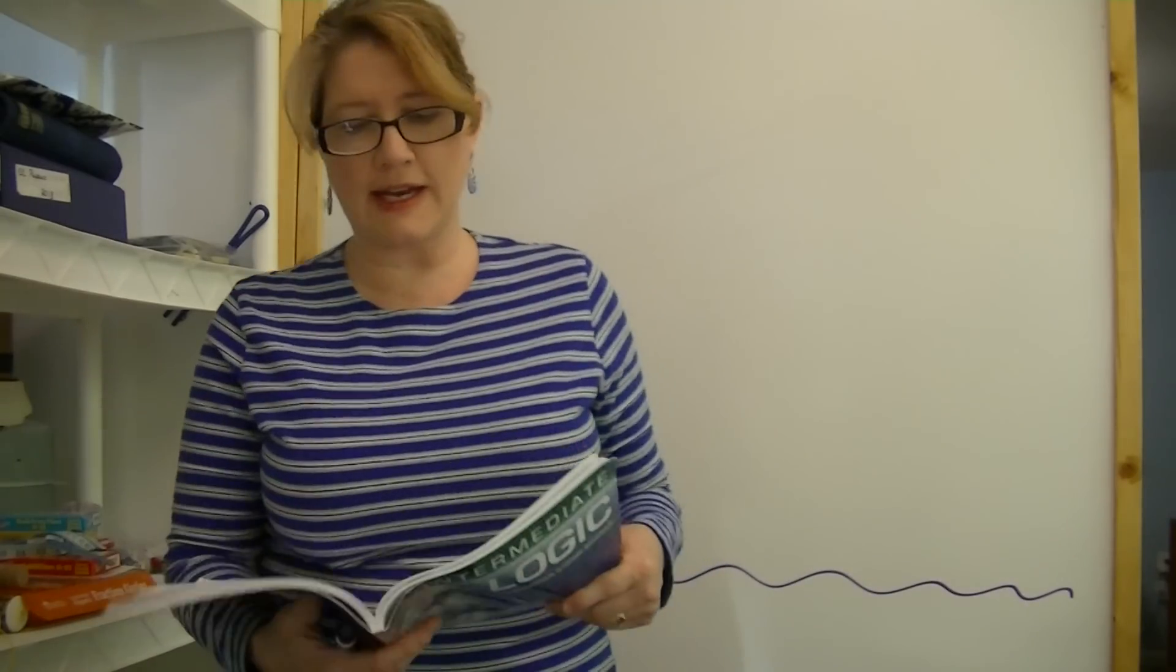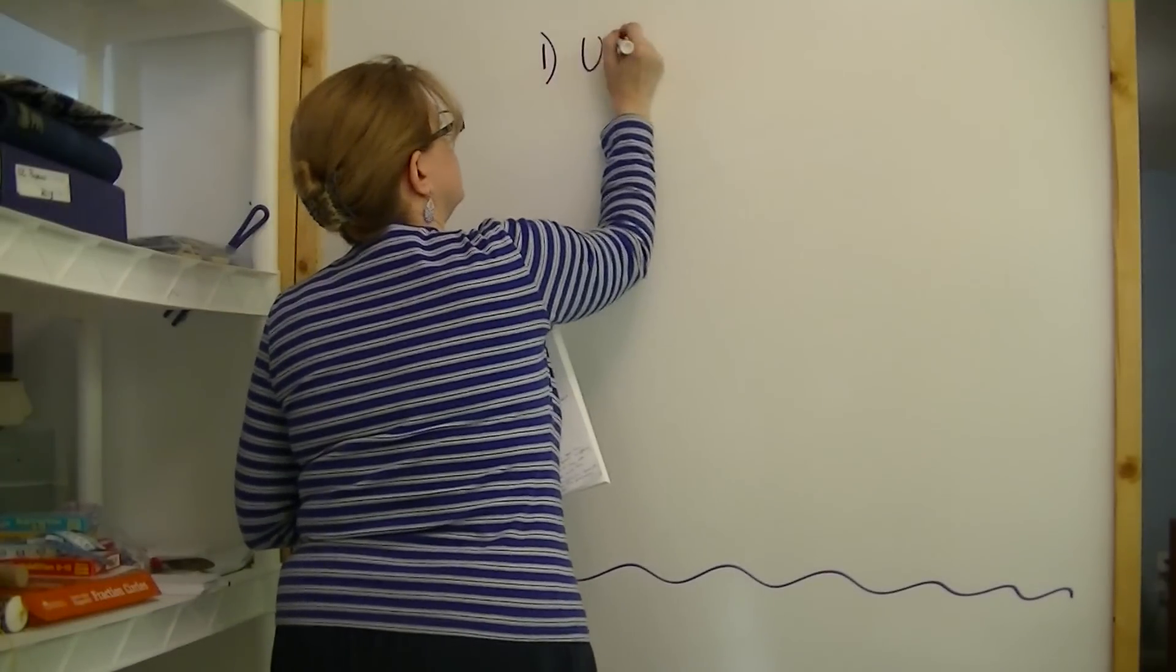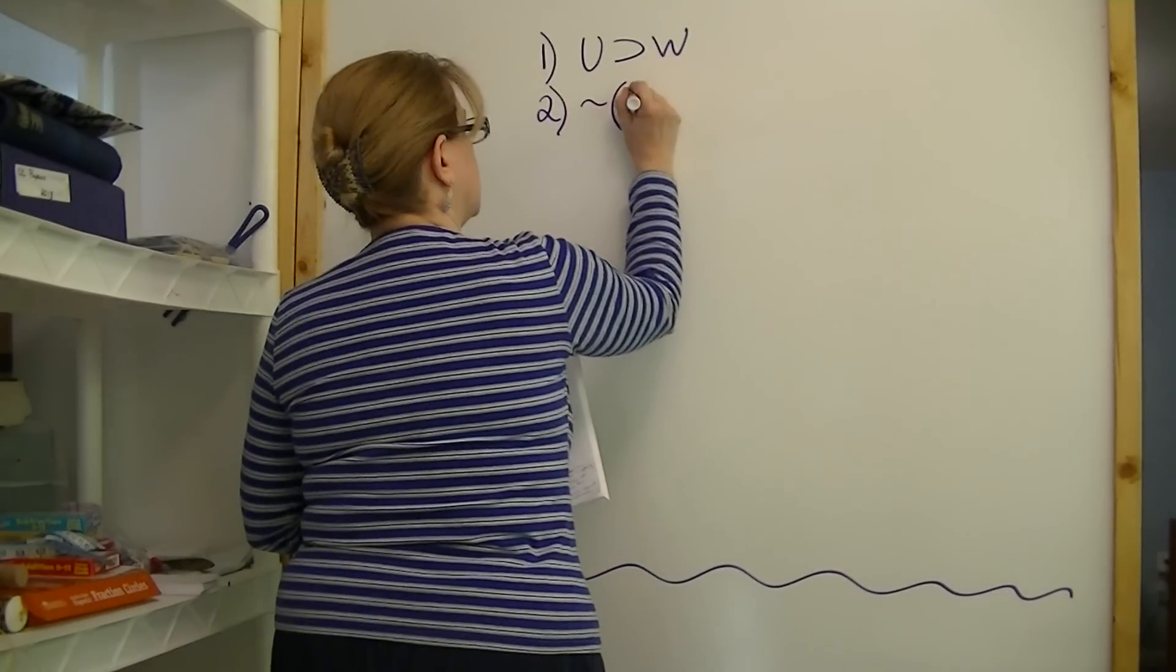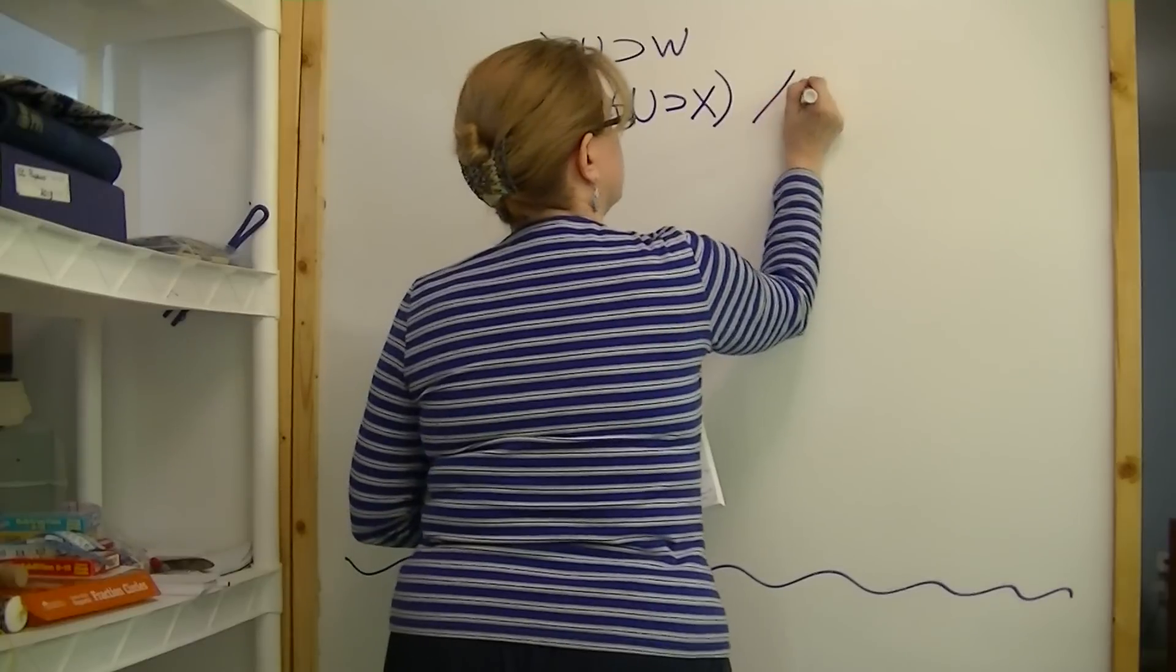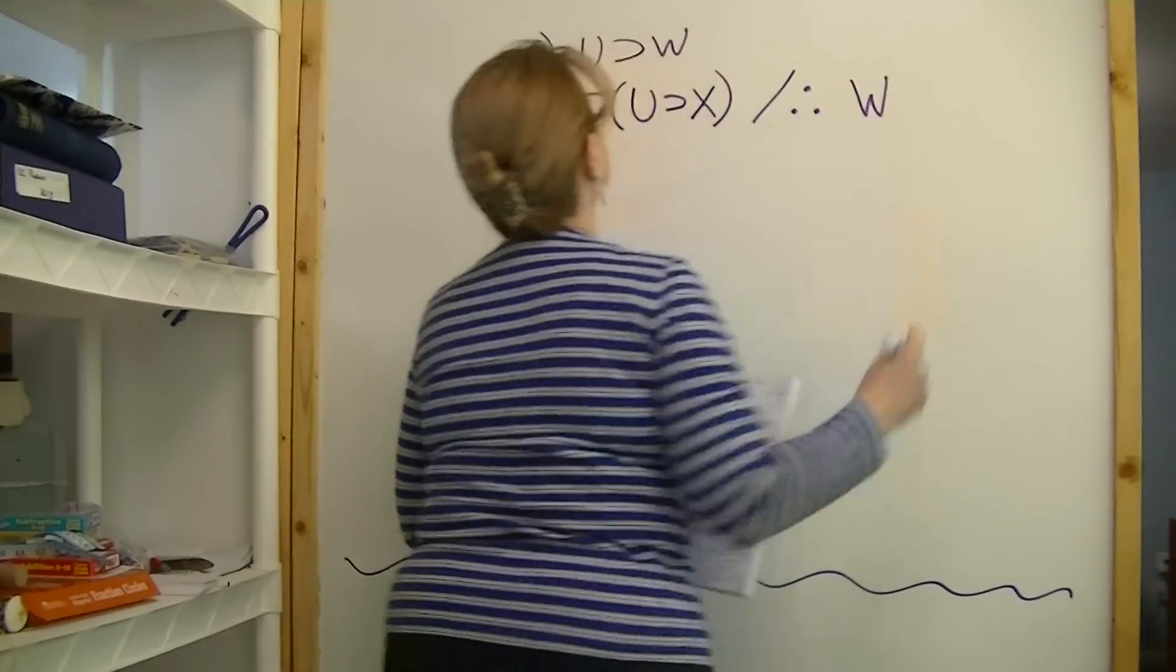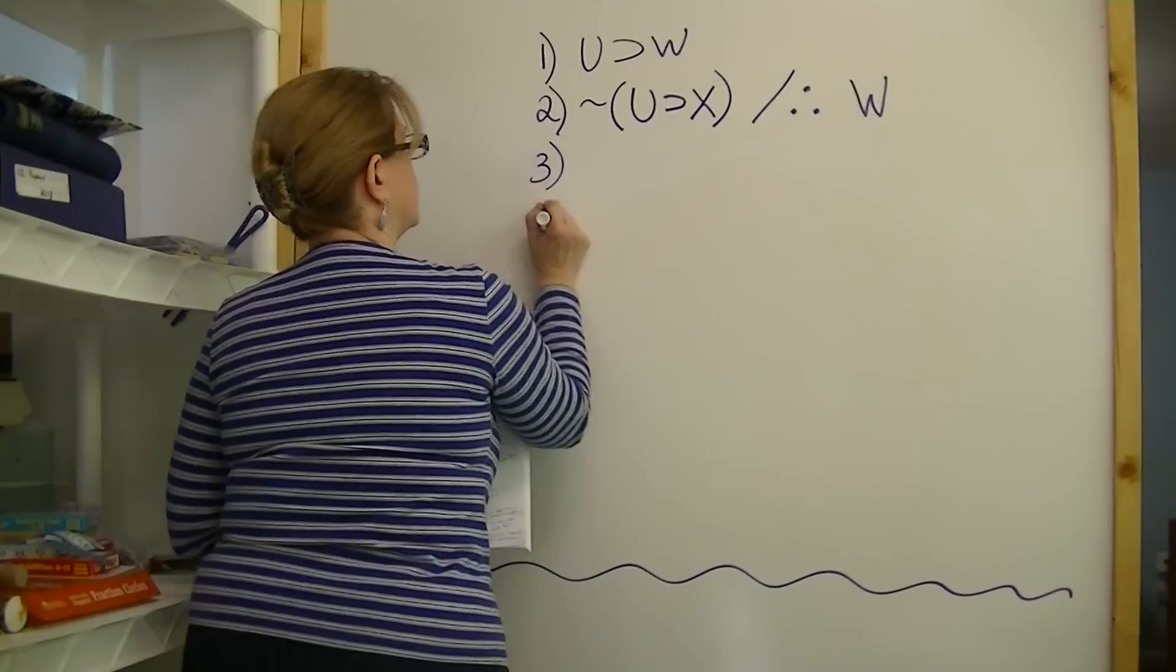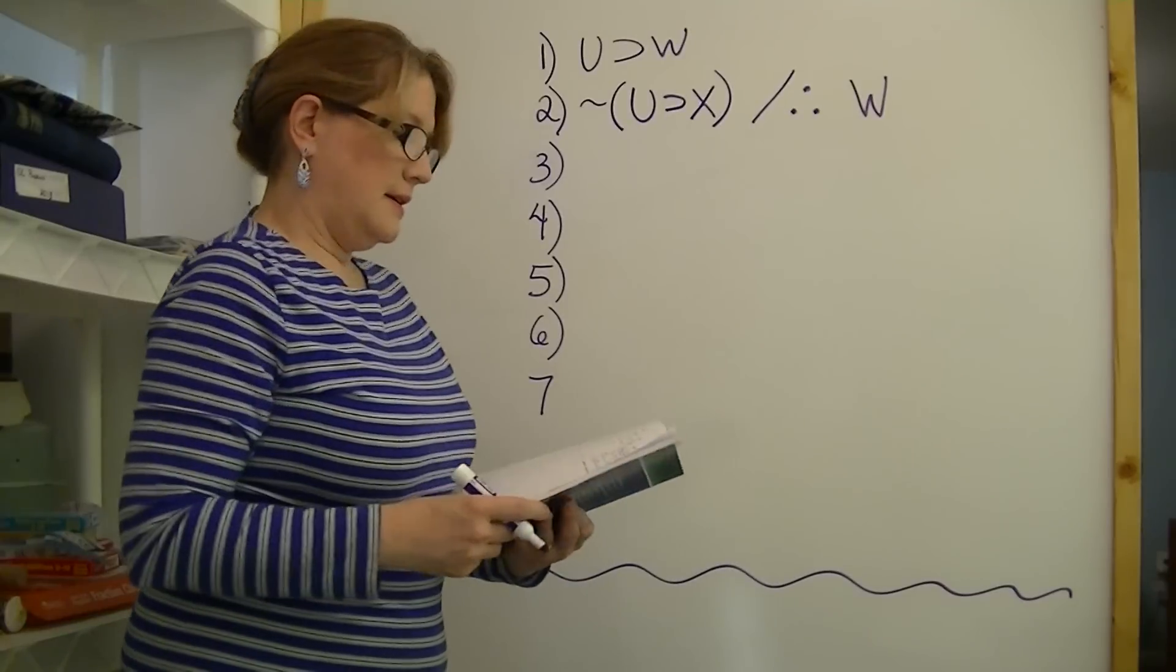Now take a look at it. It says, if U then W, not if U then X, therefore W. And we have a few more lines to solve it. Up to 7, 4, 5, 6, 7.